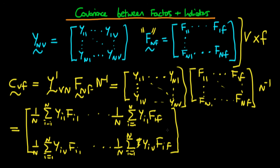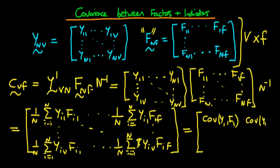That is exactly our matrix when we do this multiplication, with all the various components in between filled out in analogous form. When we examine each component, we see that if variables are standardised, each component represents a covariance. The first component is the covariance between the first indicator variable and the first factor — that's the covariance of y1 with f1. The last component in the first row is the covariance between y1 and ff. The last component in the first column is the covariance between yv and f1, and the last component is the covariance of yv with ff. We should close off this matrix as well.